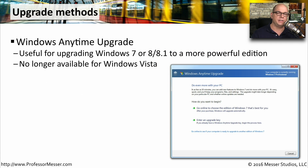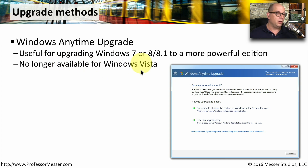We often think about the upgrade process where we'd go to a third-party location, purchase a brand new version of the operating system, bring it home, and then install it. But Microsoft has made this very easy with something called a Windows Anytime Upgrade. This allows you to upgrade your existing operating system from within the OS itself — you simply provide a credit card to pay for the upgrade, and it handles everything else directly from the operating system. This feature is no longer available for Windows Vista, but at the time this video was made, you can still upgrade Windows 7 and Windows 8 to a more powerful version using Windows Anytime Upgrade.